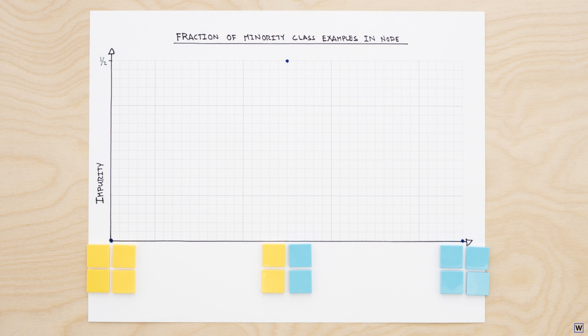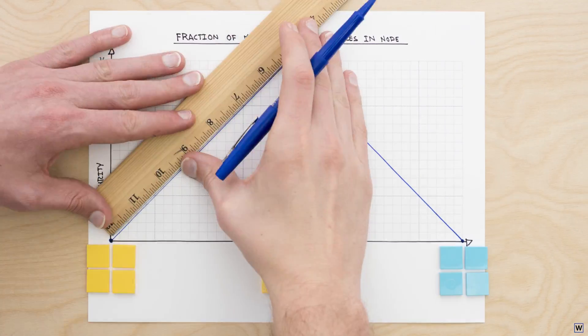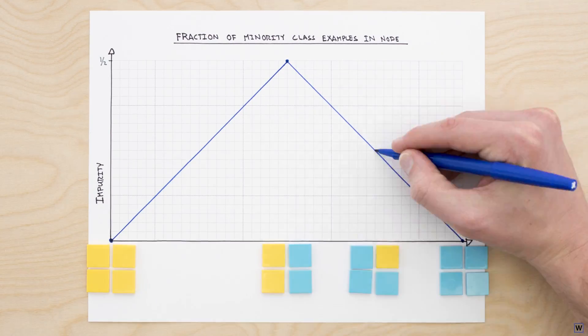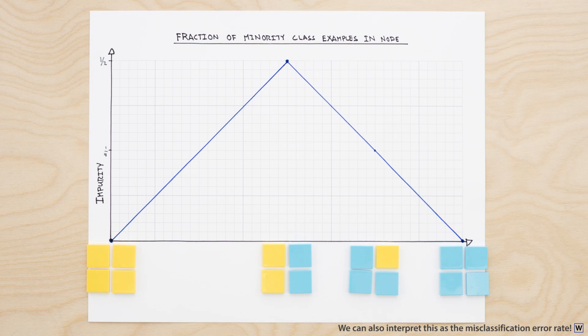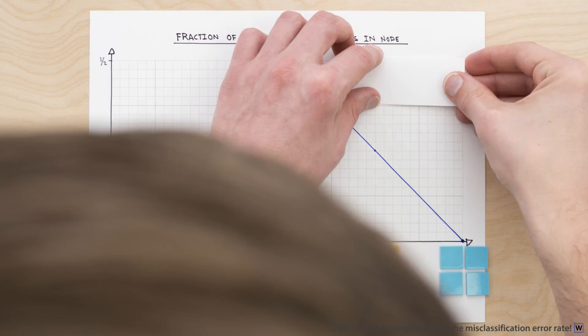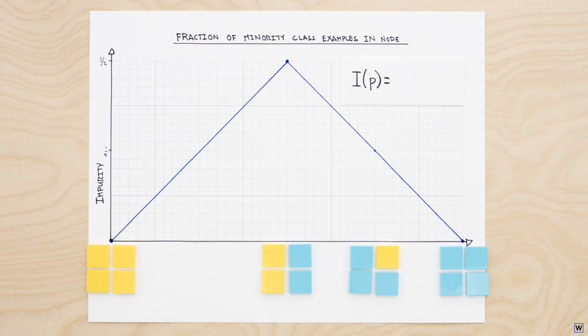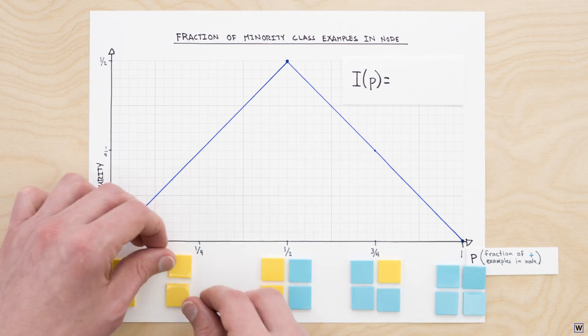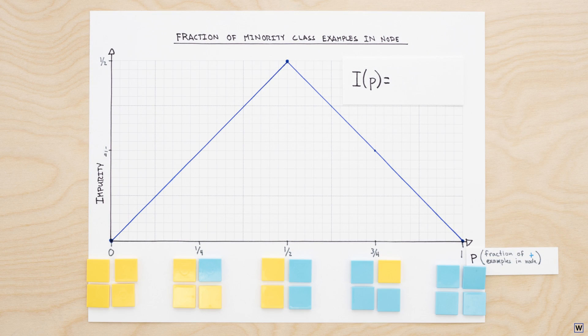Finally, between these extremes, the fraction of our minority class changes linearly. A node with three positive and one negative examples has an impurity of one-fourth. Let's express our impurity measure as a mathematical function. We'll call it I of p, where p is the fraction of positive examples in our node. One way to express the metric we've come up with here, the minority class fraction, is as the minimum of p and one minus p.